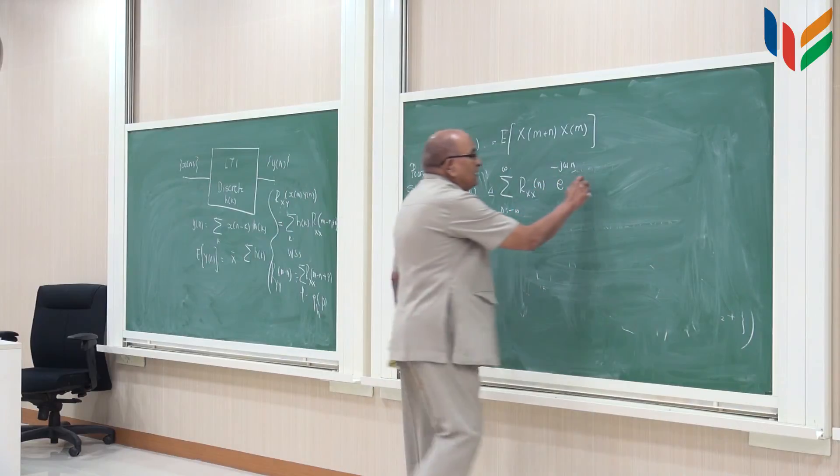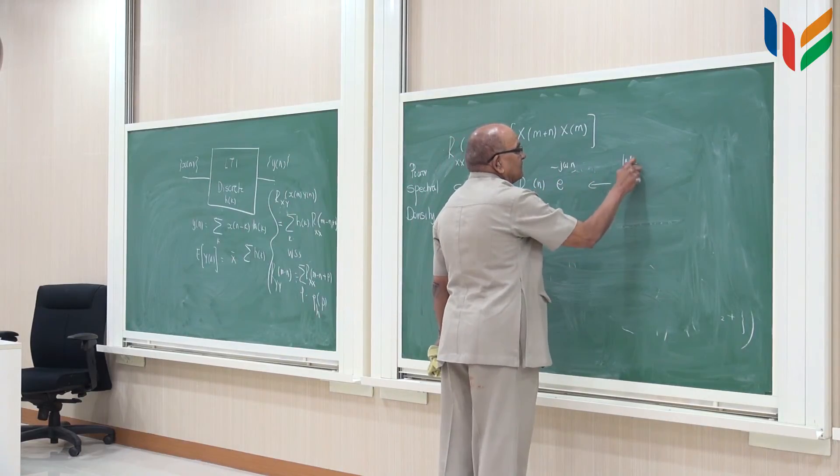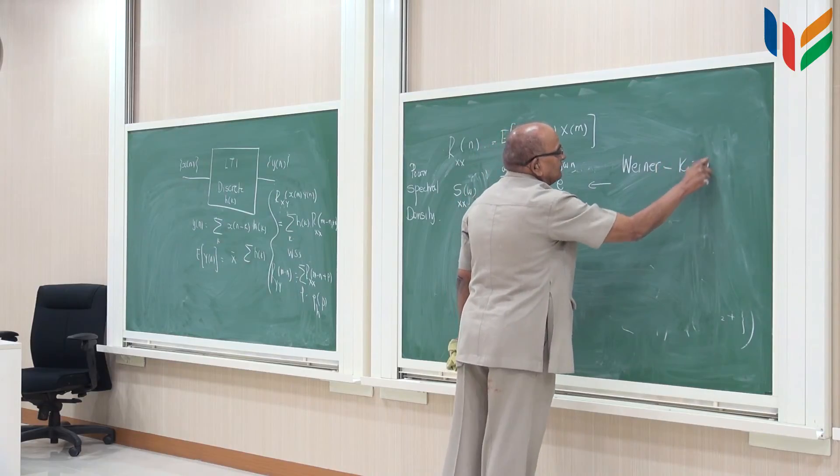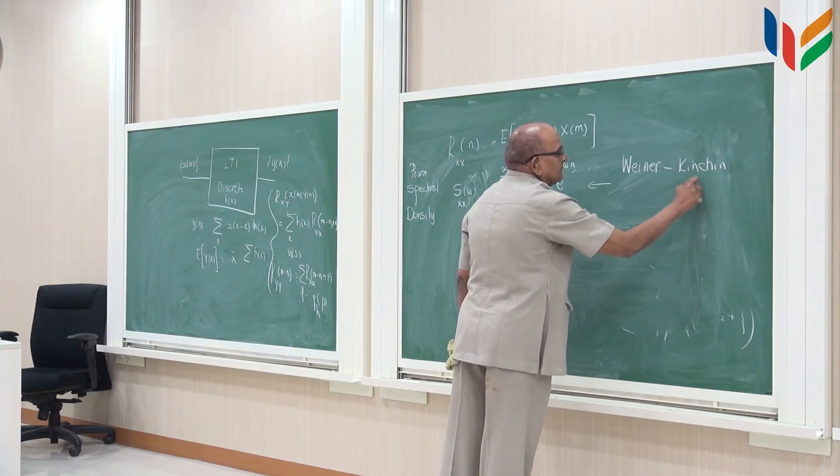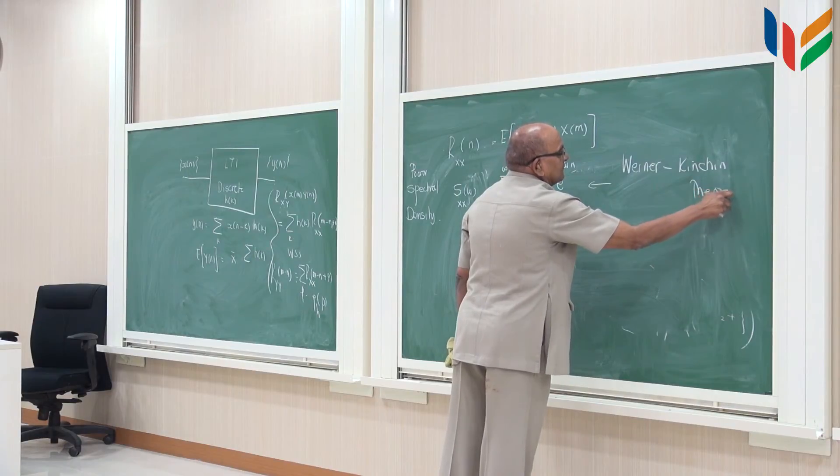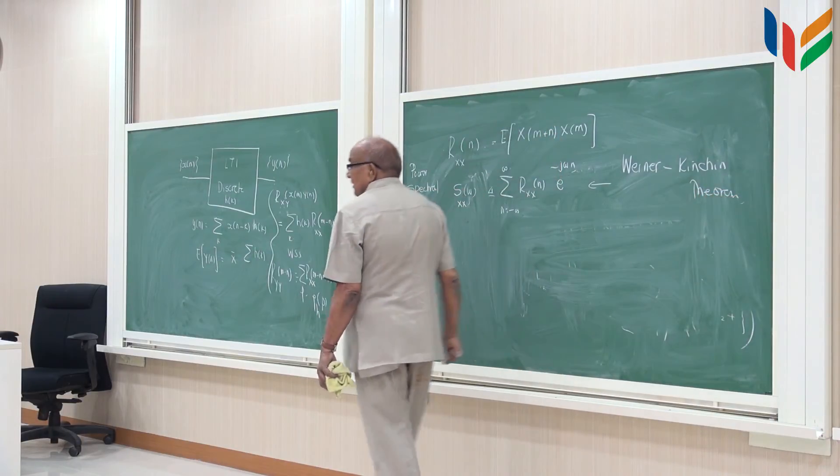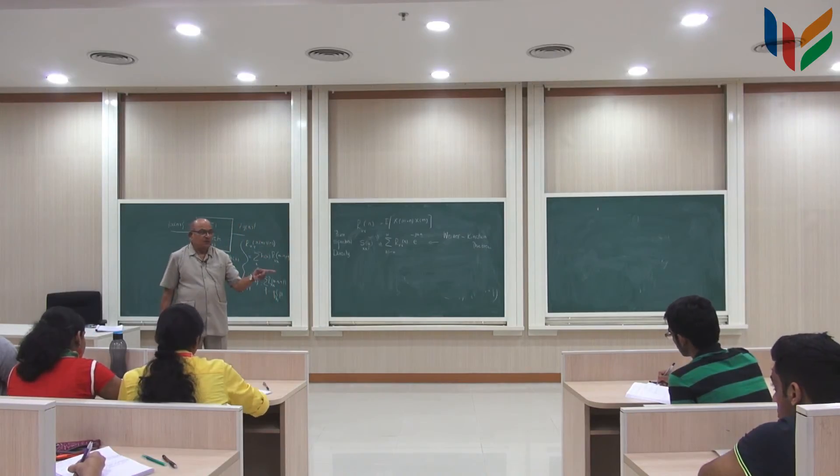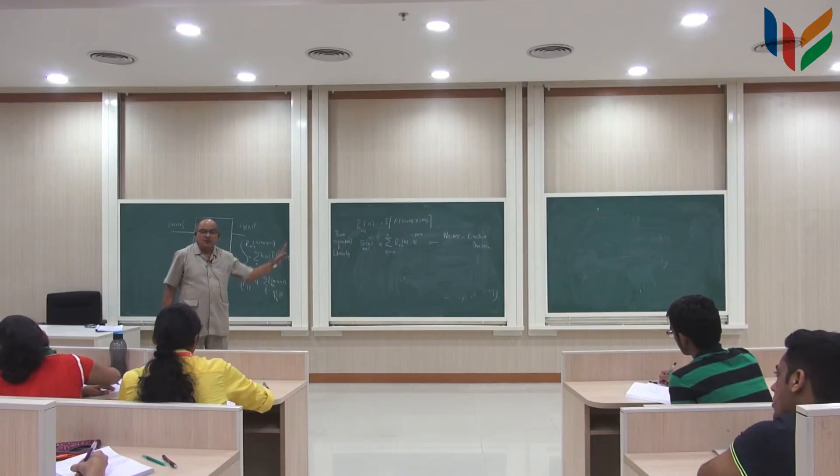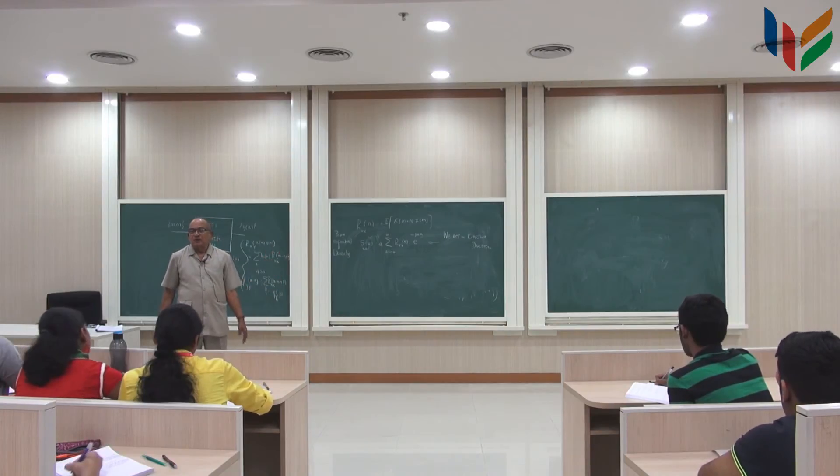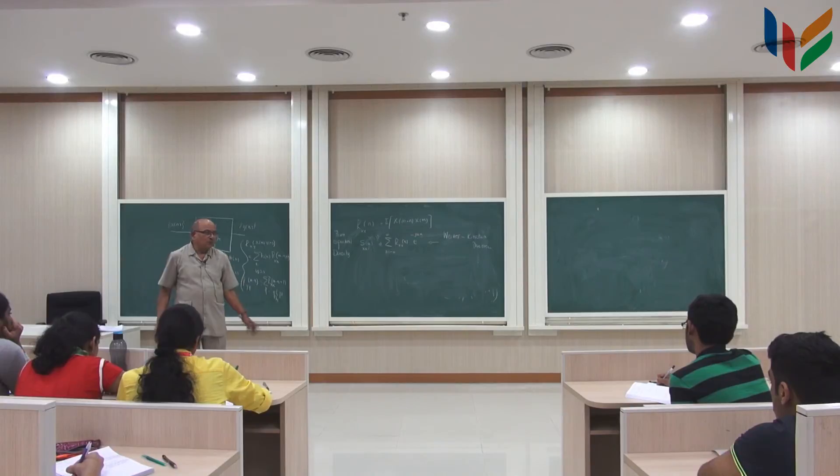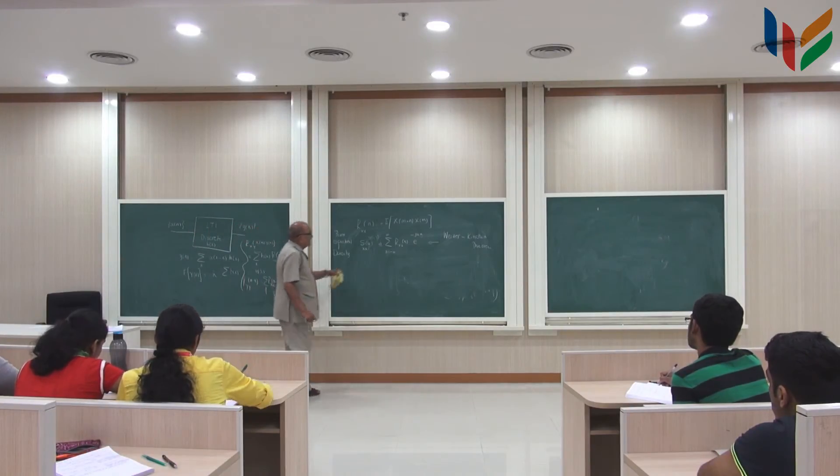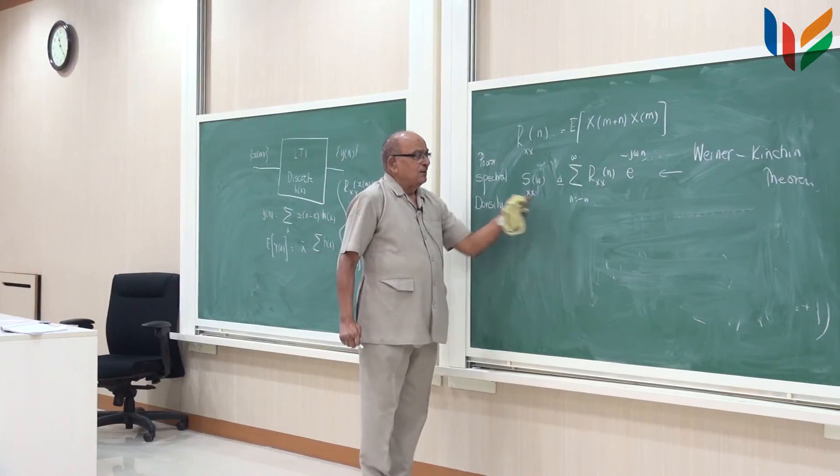That is by definition given by this. This is originally called Wiener-Kinchen theorem, that the correlation function and spectral density are related by a Fourier transform. Very powerful result we will use extensively. Anyway, leave that aside. Let us write this definition, given by this.